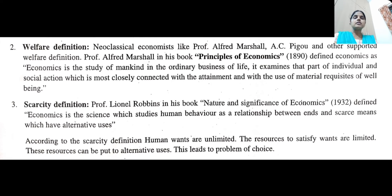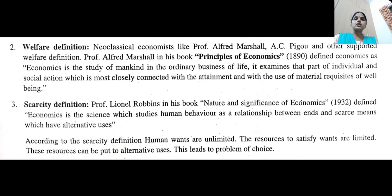So far we have studied three definitions of economics. The first one is wealth definition, the second is welfare, and the third is scarcity definition. According to the wealth definition given by Adam Smith, economics is a science of wealth. According to the welfare definition given by Professor Alfred Marshall, economics is the science which studies about mankind in the ordinary business of life. The third definition is the scarcity definition given by Professor Lionel Robbins, and according to him, economics is a science of choice.